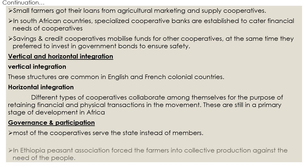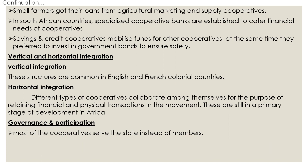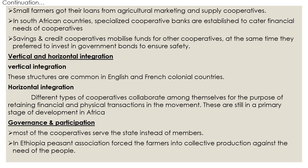In general, in Africa most cooperatives serve the state instead of members. The co-optation of cooperatives makes them structures of operation instead of participation — they impose actions and policies that ultimately support the state rather than members. That is why members should be given more importance. For example, in Ethiopia, peasant associations force farmers into collective production against the actual needs of the people.